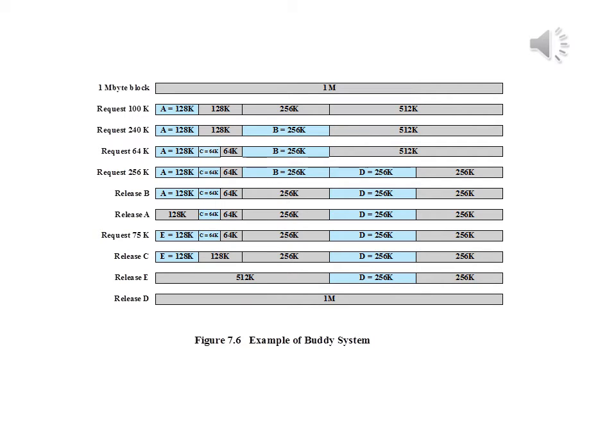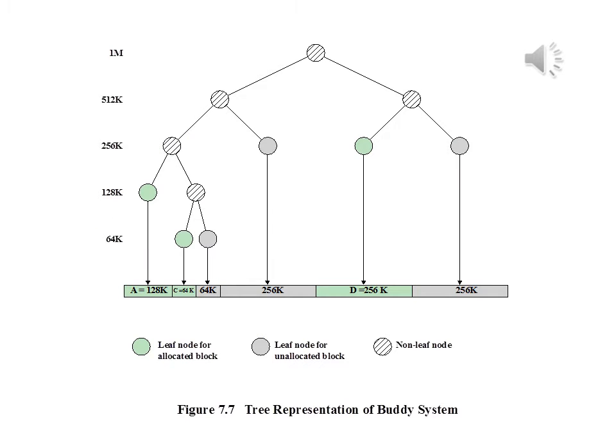The process continues with splitting and coalescing occurring as needed. Note that when E is released, two 128K buddies are coalesced into a 256 kilobyte block, which is immediately coalesced with its buddy. The figure in this slide shows a binary tree representation of the buddy allocation immediately after the release B request. The leaf nodes represent the current partitioning of the memory. If two buddies are leaf nodes, then at least one must be allocated, otherwise they are coalesced into a larger block.